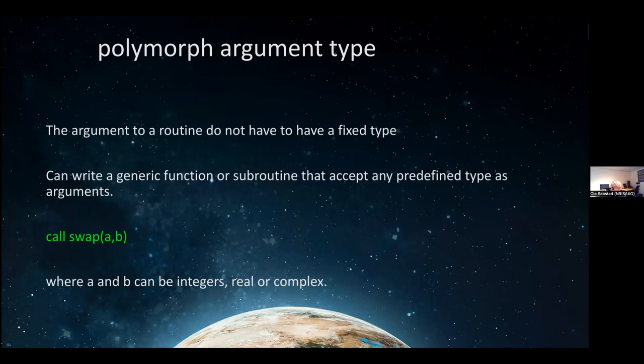In the old days, you would need many different swap routines: `ISWAP` for integers, `RSWAP` for real, `DSWAP` for double, `CSWAP` for complex, and `ZSWAP` for double complex - five different routines. What I'll show now is you can do this with only a single routine called `swap`, handling integers, real, or complex. You can extend it to whatever type you like.